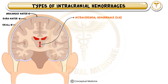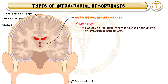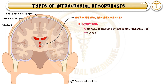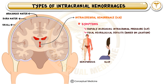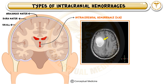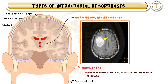Intracerebral hemorrhage (ICH) refers to bleeding within the brain parenchyma itself. The most common cause of ICH is hypertension, which leads to rupture of small penetrating arteries in the basal ganglia, thalamus, pons, and cerebellum. Other causes include amyloid angiopathy in elderly patients, coagulopathies, and vascular malformations. Patients with ICH present with sudden neurological deficits such as hemiparesis, slurred speech, and altered mental status. On CT scan, ICH appears as a hyperdense area within the brain. Management includes controlling blood pressure, often aiming for a systolic BP of less than 140 mmHg, and in some cases surgical decompression may be needed.